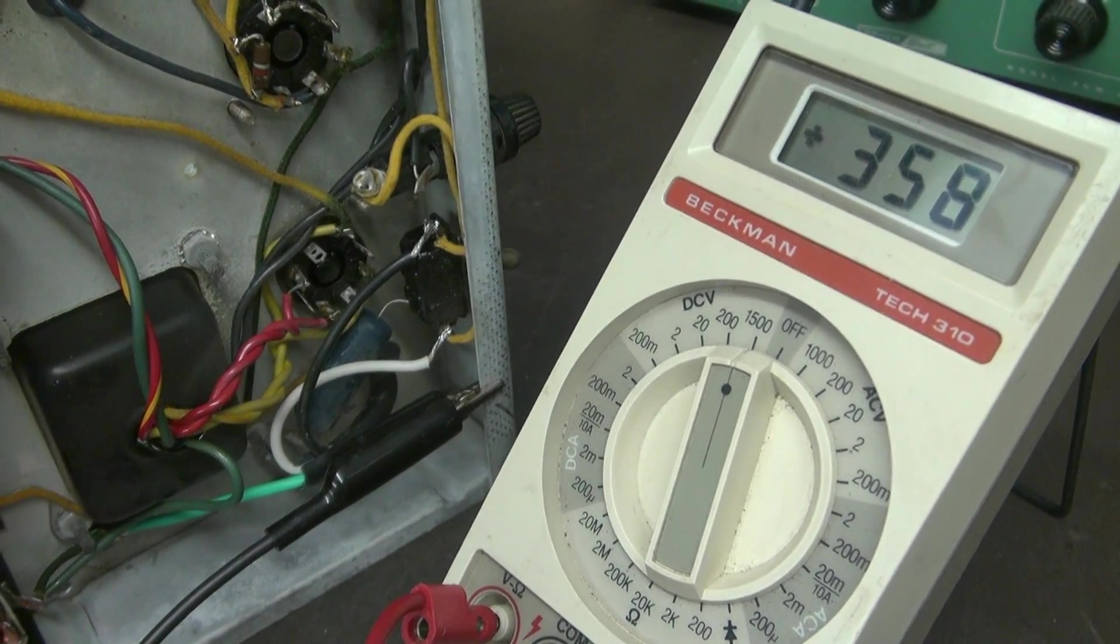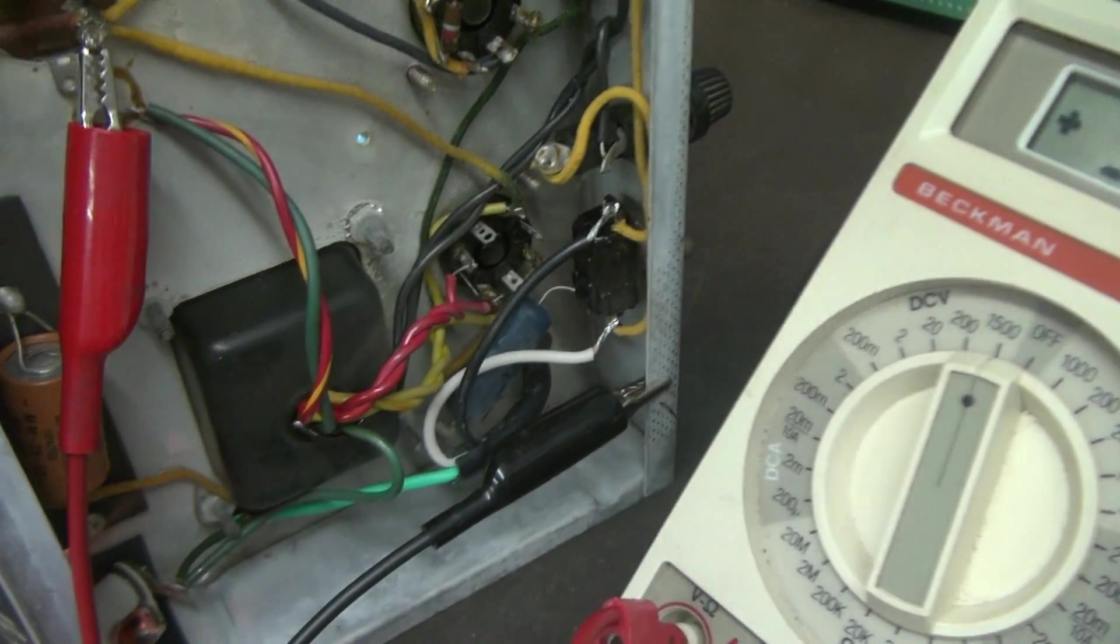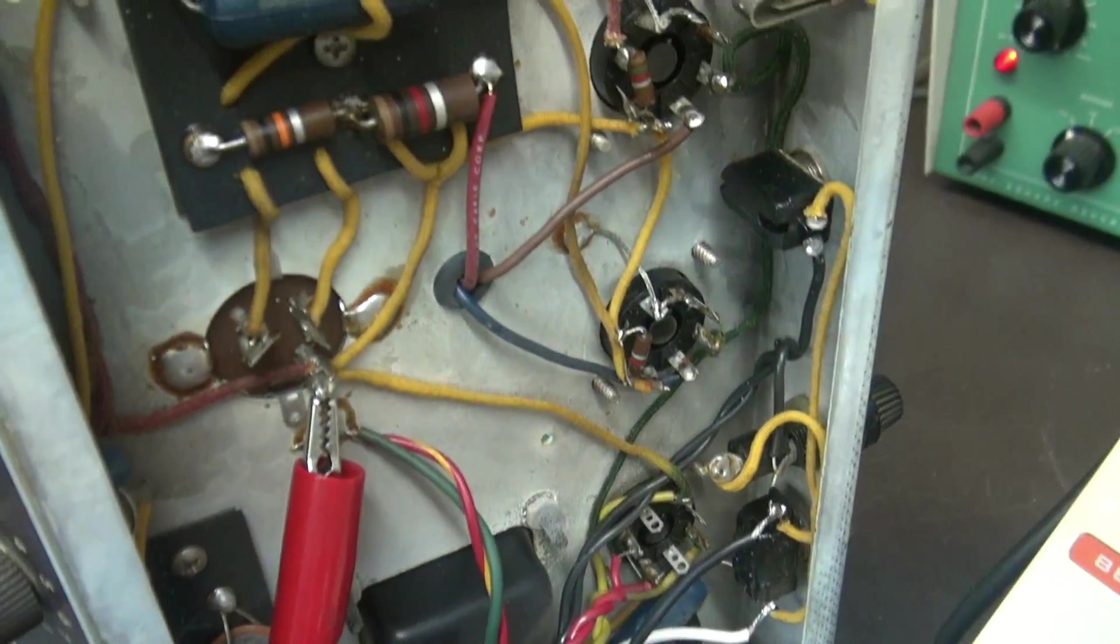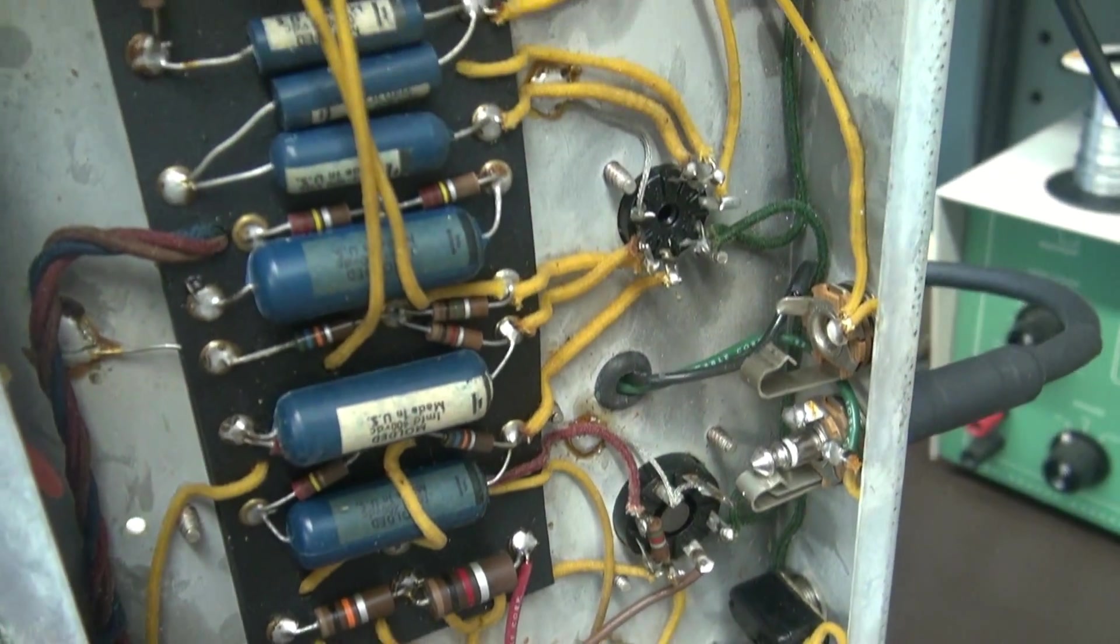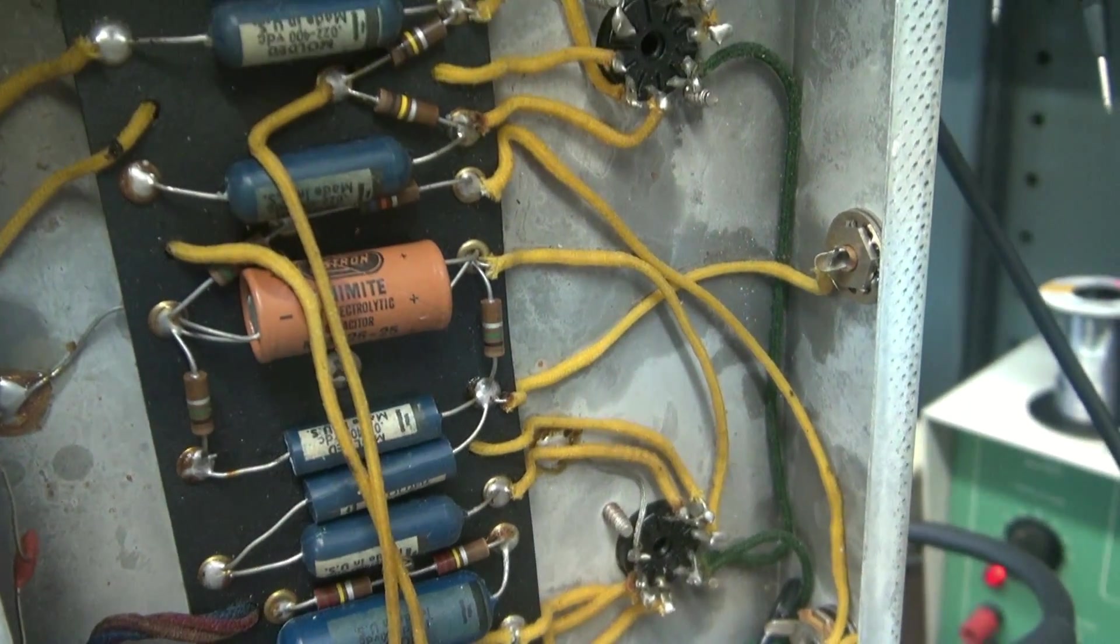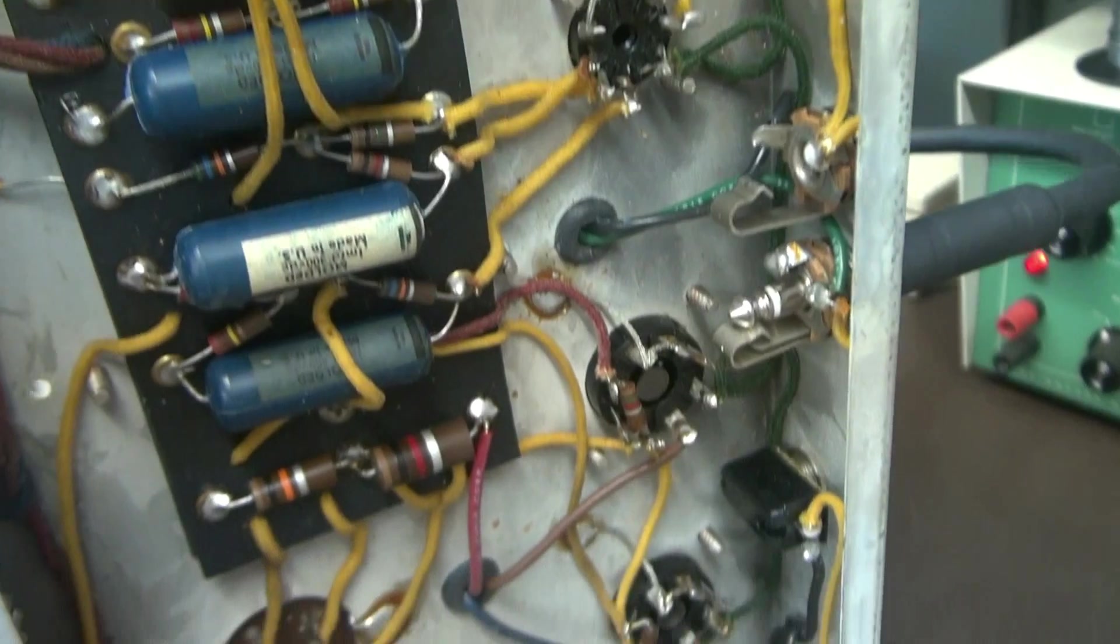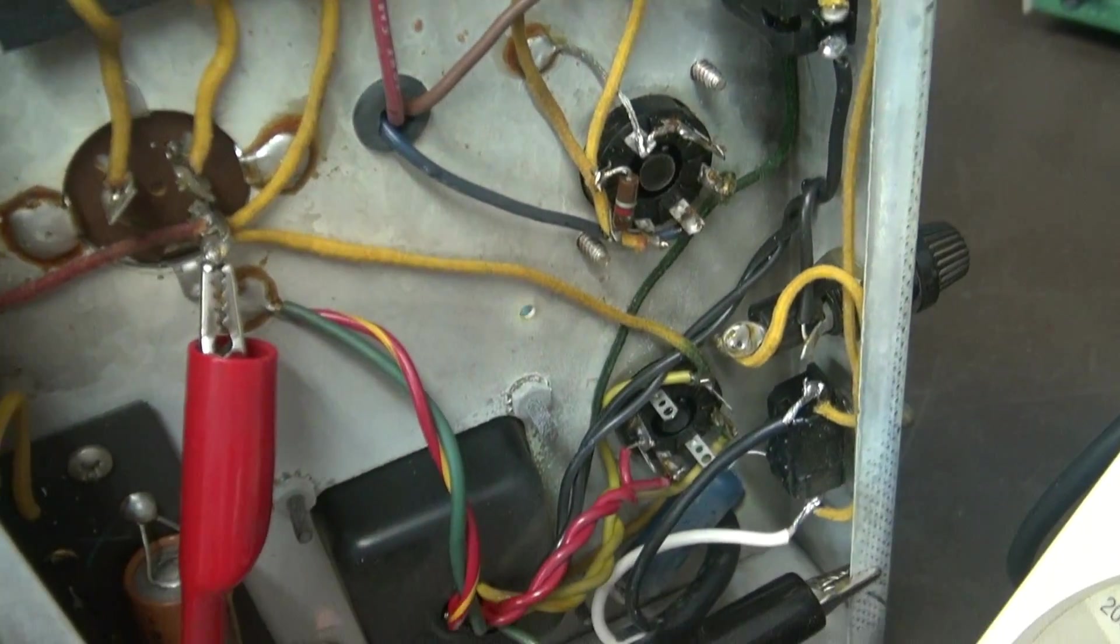Now I have the meter on DC. You can see the plate voltage about 358 on the filter cap. Swoop up here. You can see she's pretty much original. It's got all those old blue caps. Pretty cool. This thing has not been touched in a long time.